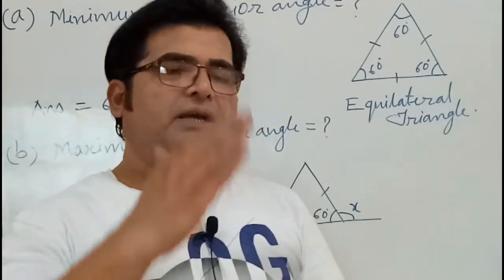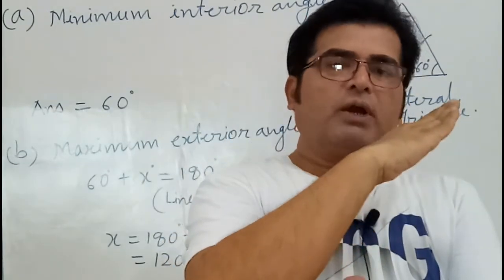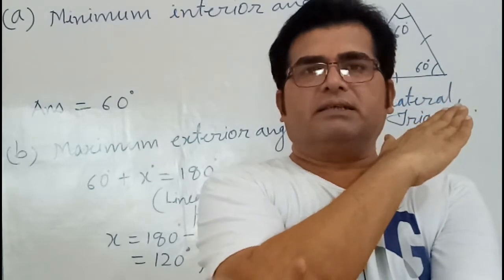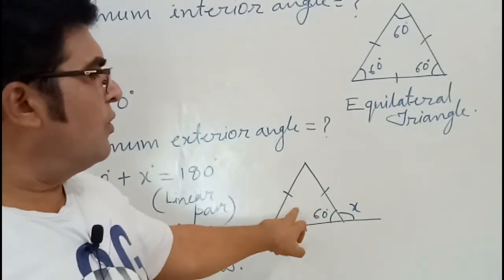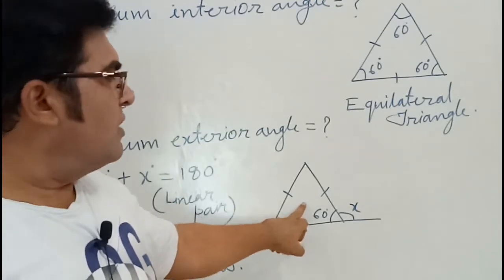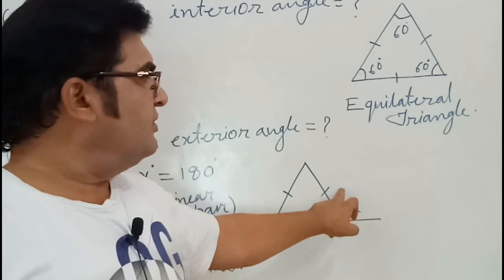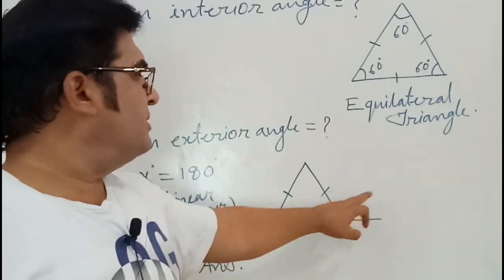Because when the side is bending more and more, the exterior angle is increasing. The minimum interior angle we know is already 60, so I have produced the side of the equilateral triangle. Then, we get the exterior angle, which I have named X.